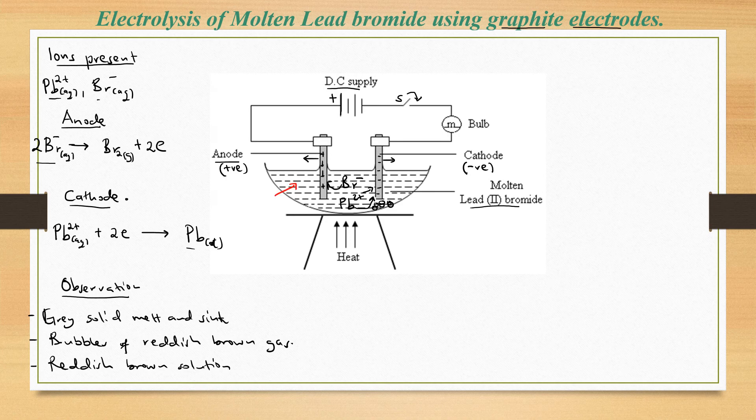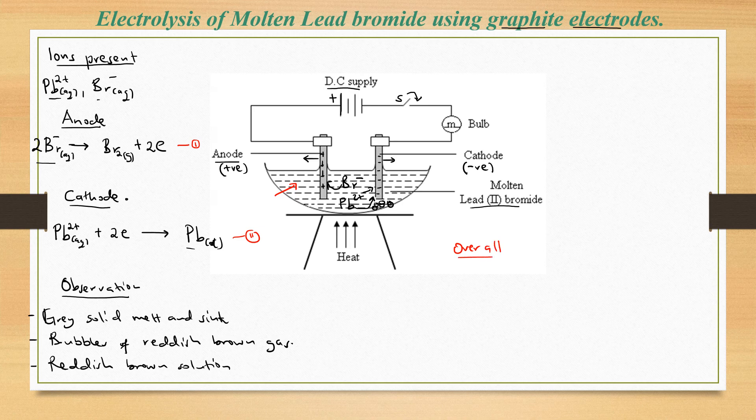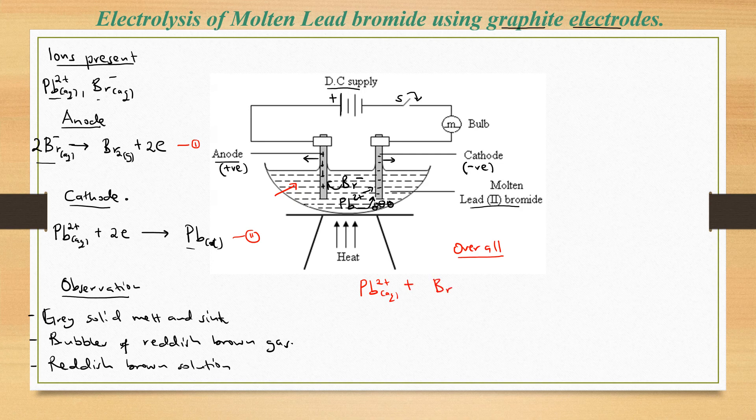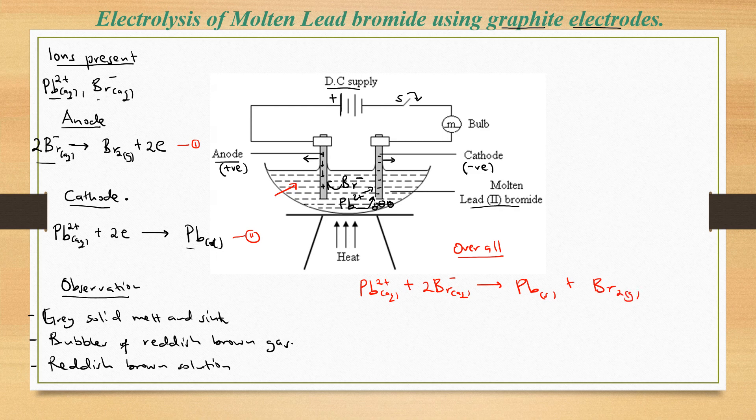When you look at equation one and equation two, we can come up with an overall equation for the reaction by combining the two. That means we shall have our lead two plus ions (Pb²⁺); they will obviously get some electrons from the two bromide ions (2Br⁻) so that we form our lead (Pb) and bromine gas (Br₂). This will be the overall equation for this electrolysis.